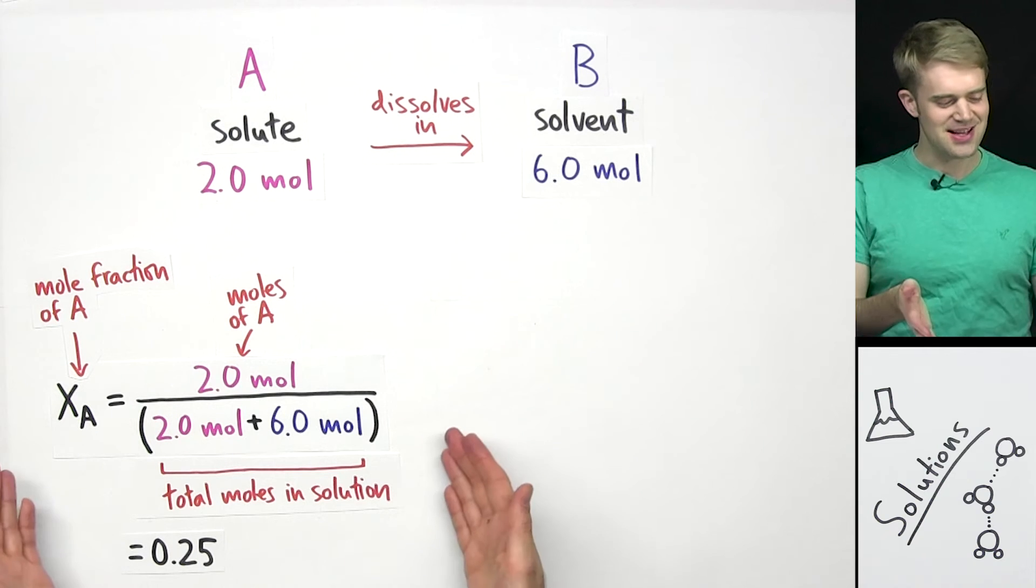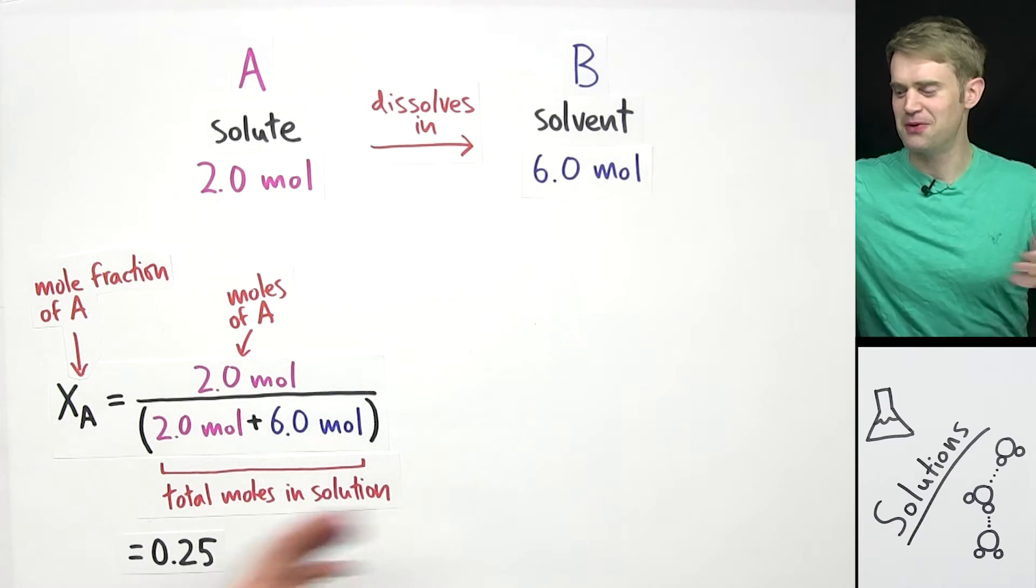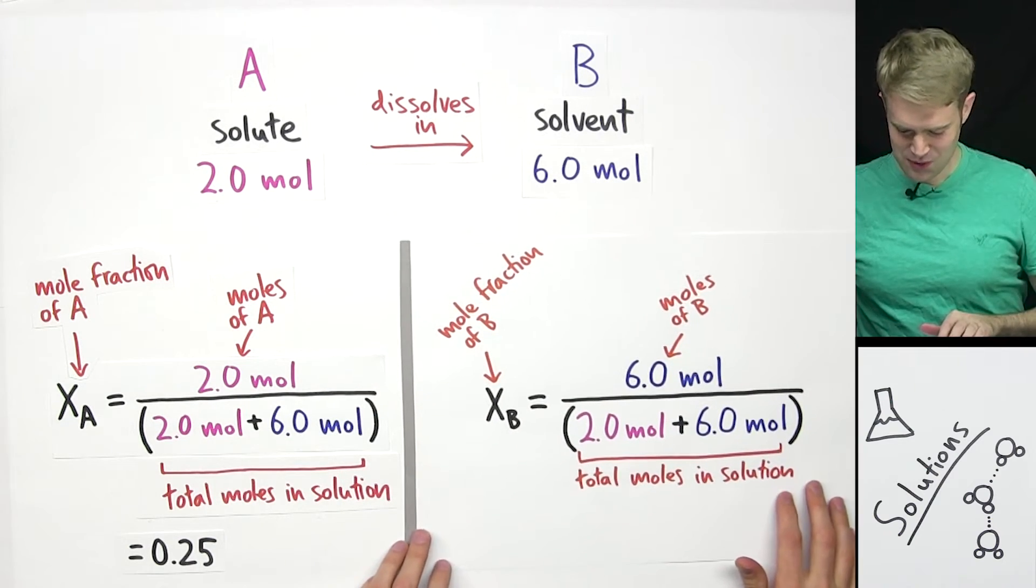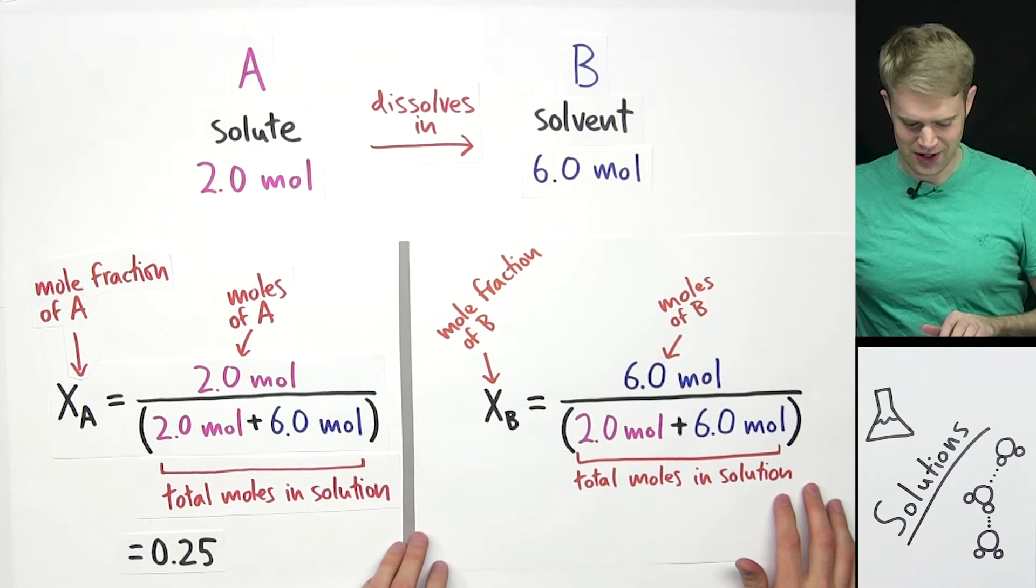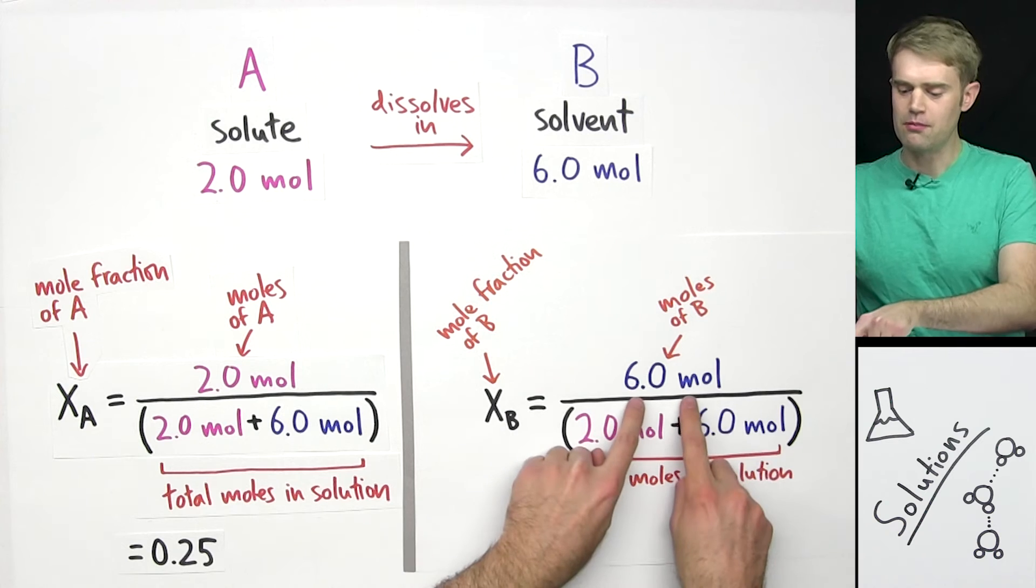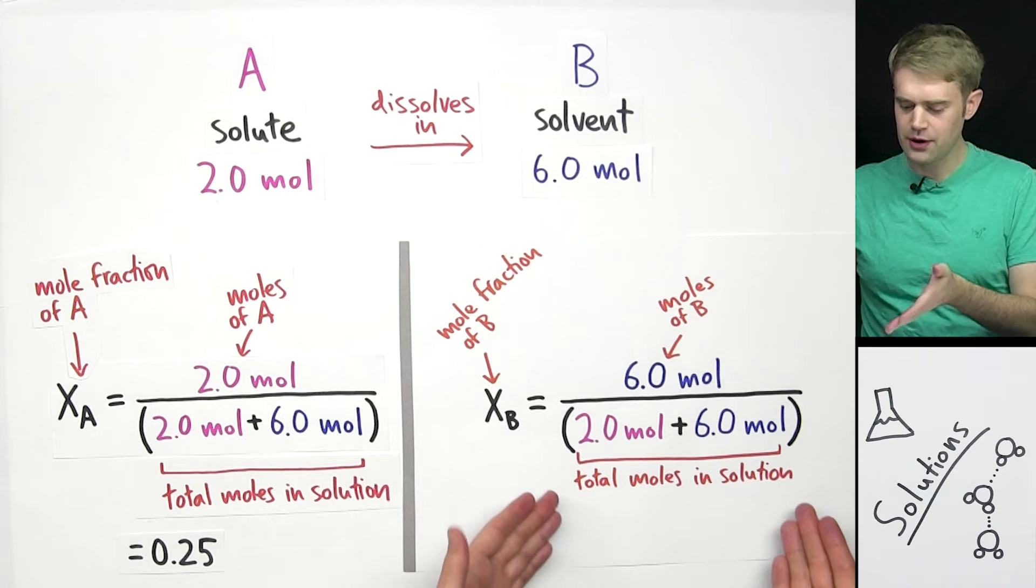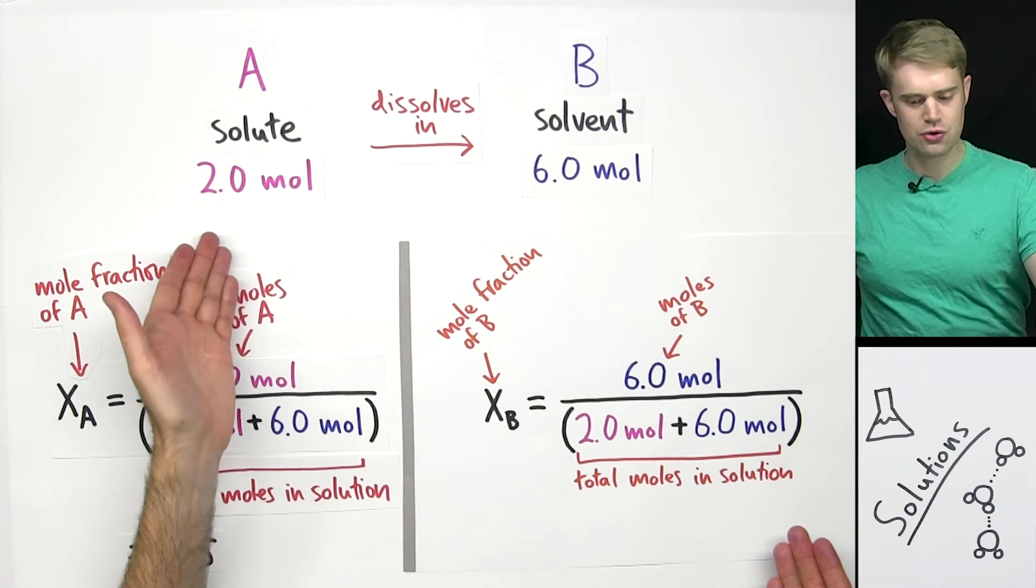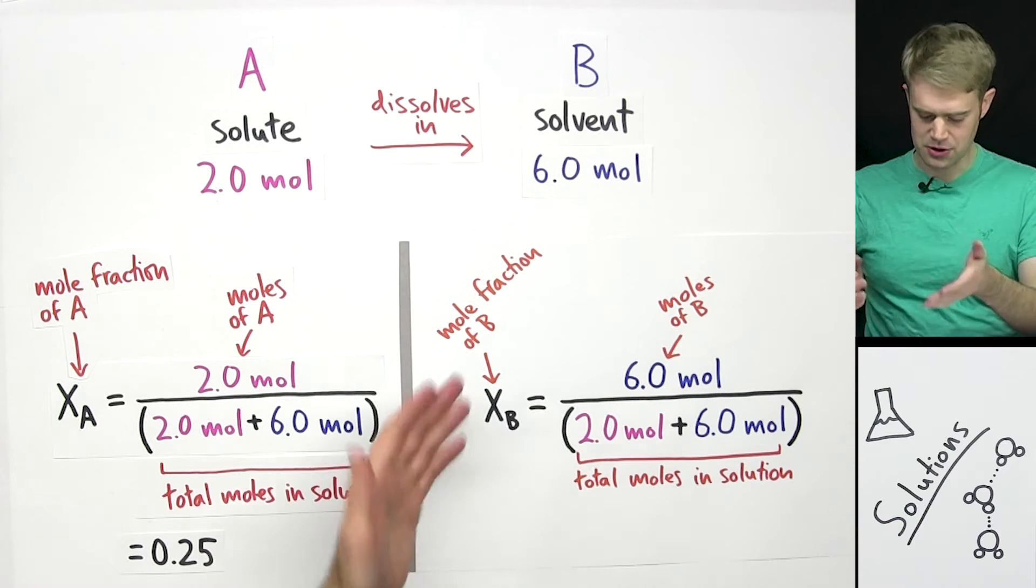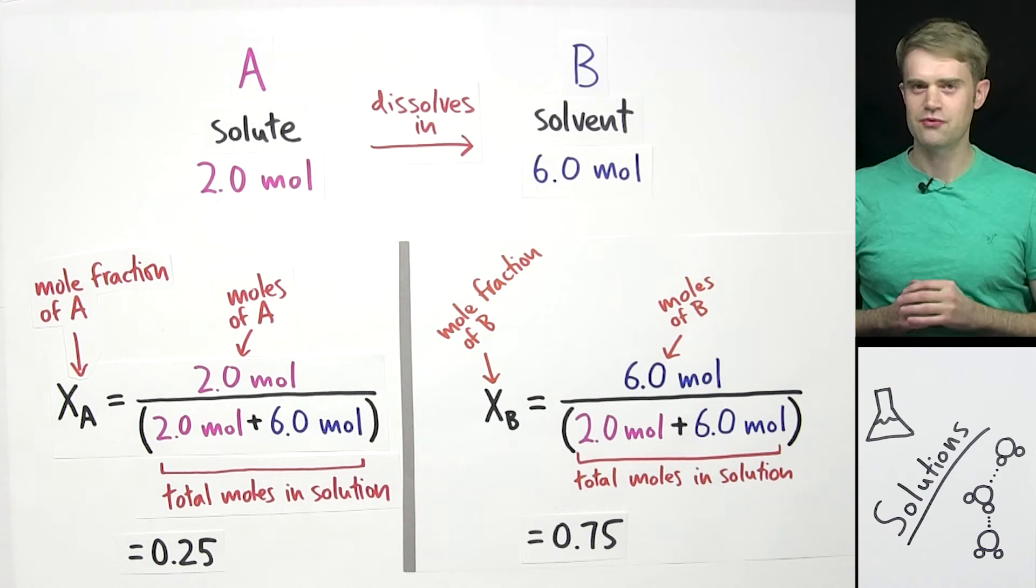So this is how we calculate mole fraction of A. We can do the same thing and calculate the mole fraction of B. And here is what that equation looks like. We have, on top of the fraction, we have the moles of B, 6.0 moles, and then on the bottom we have the total number of moles in the solution, 2.0 plus 6.0. And when we do this math, we get 0.75.